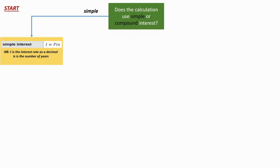Some people make the mistake of thinking that N is the number of periods, but it's not — it's the number of years in the simple interest formula. That was a fairly easy one; we've been using simple interest since about grade 8. But what happens if it's compound interest? Well, firstly we're going to ask ourselves one more question.